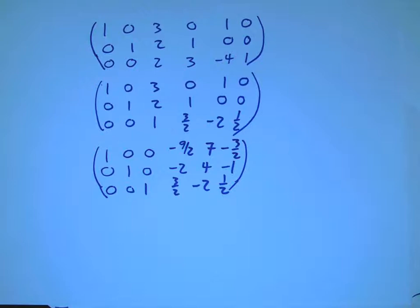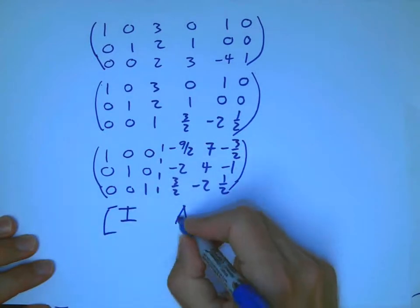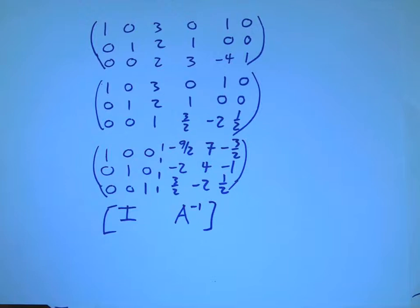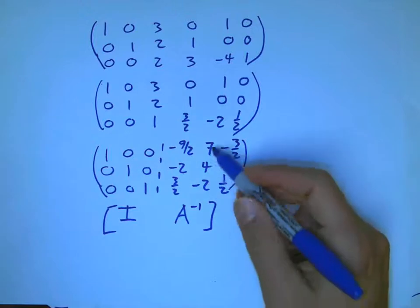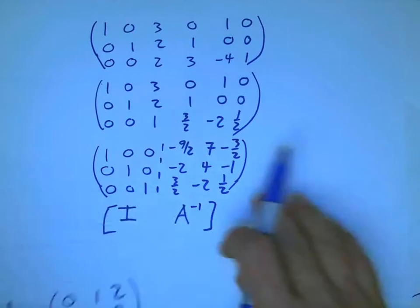And now, what turns out is that is the inverse matrix. I'm just checking my resource here. Claim is, now this is I, and that's A inverse.